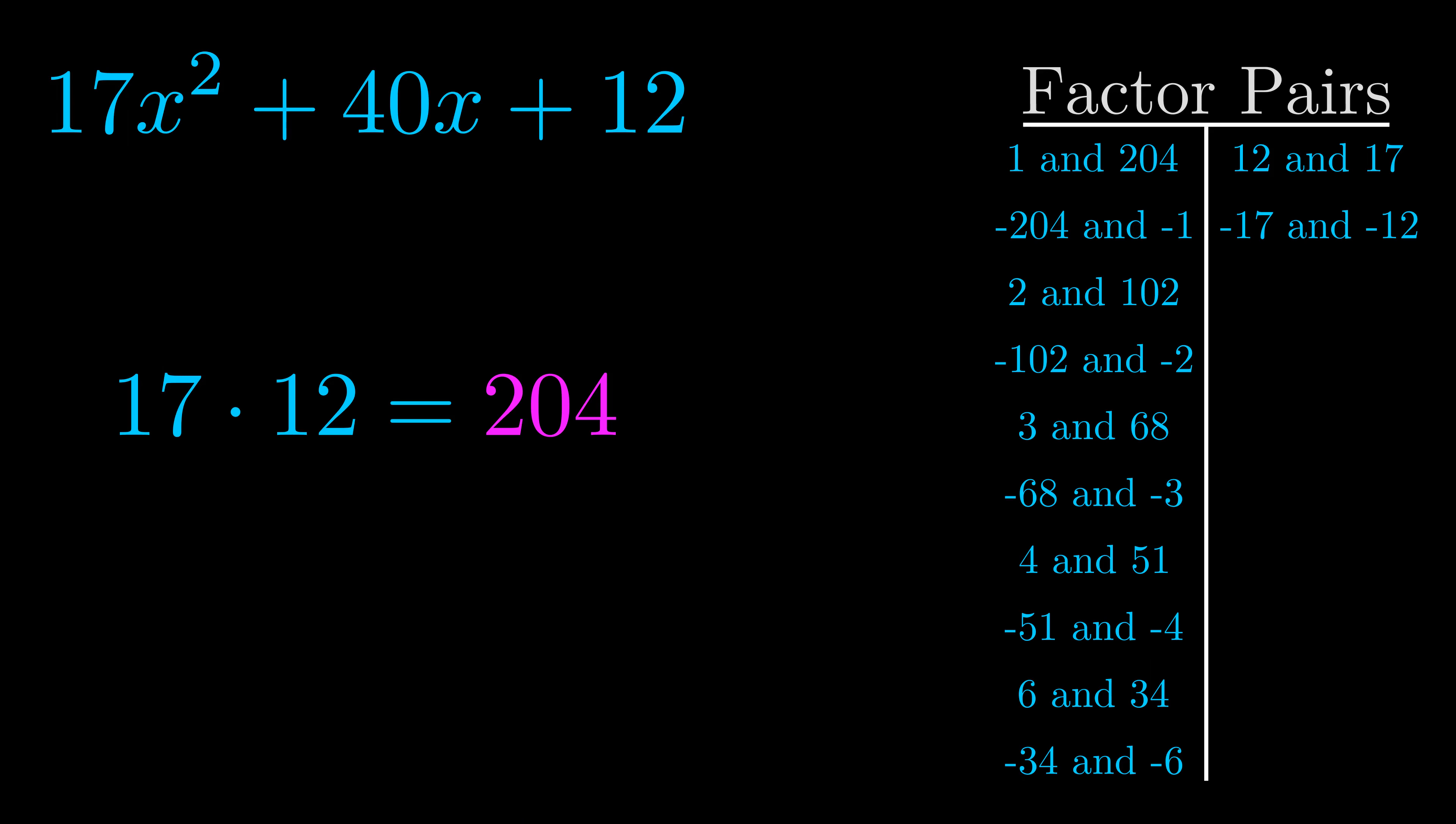The b value is the coefficient on the x term. That's the middle term, the one that we haven't done anything with yet. And really this is the only factor pair that we need.